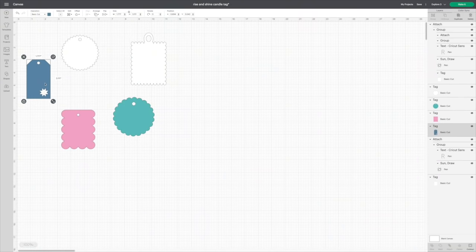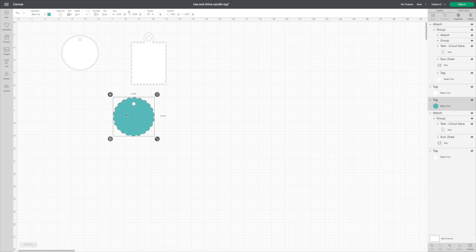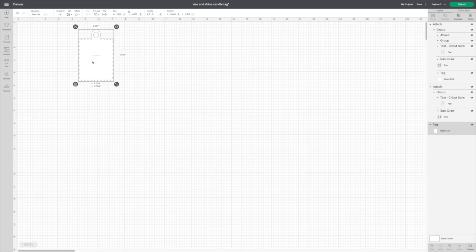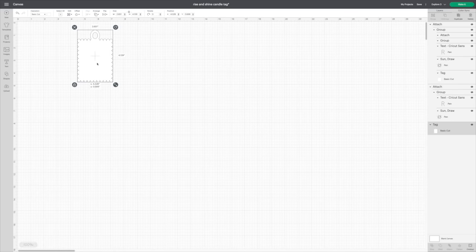Once I had the selection of tags, then I went through a process of elimination and got rid of the ones that I just really didn't like as much. This is the winner that I picked and this is what's going to be cut on my Cricut Maker 3.